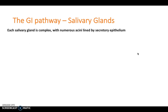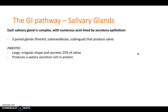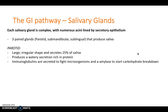The salivary glands are very complex with numerous acini lined by secretory epithelium. We have three paired salivary glands: the parotid, submandibular and sublingual. The parotid gland is the largest, irregularly shaped, outside the oral cavity, and secretes 25% of our saliva. It produces a watery secretion rich in protein; immunoglobulins are secreted to fight microorganisms and amylase is secreted to start carbohydrate breakdown in the mouth.